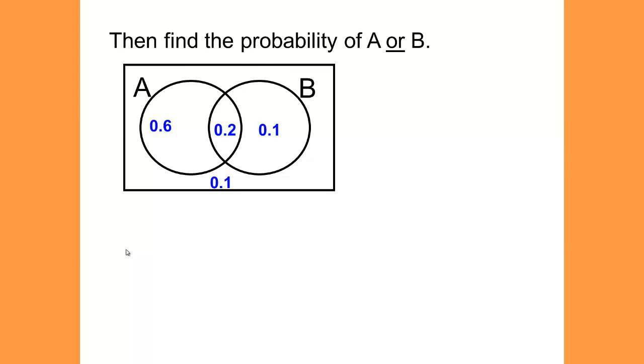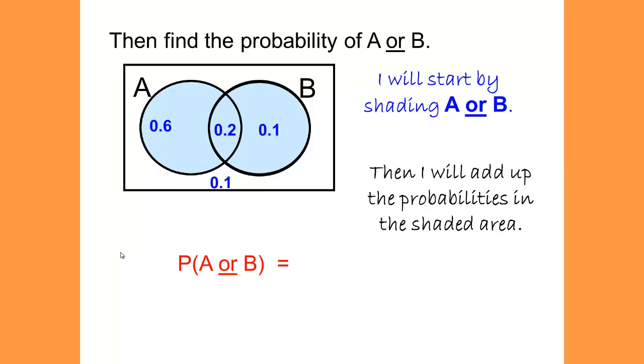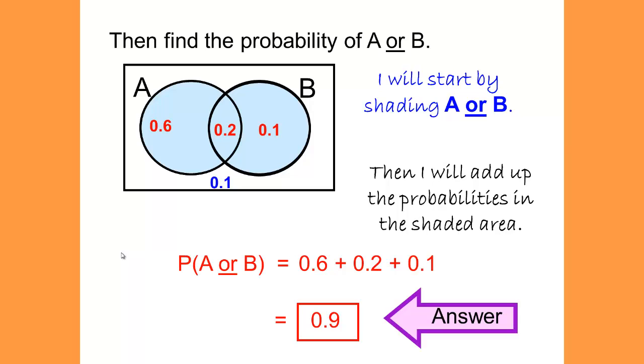And we want to answer the question that was asked, which is find the probability of A or B. We'll start by shading A or B. So we've shaded the part that we're looking for, and we simply can add up the probabilities in the shaded area. 0.6 plus 0.2 plus 0.1, which will give us 0.9, which is our answer.